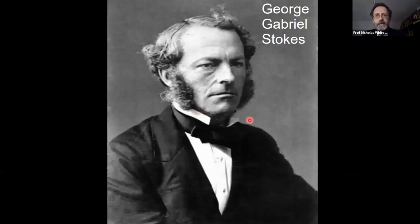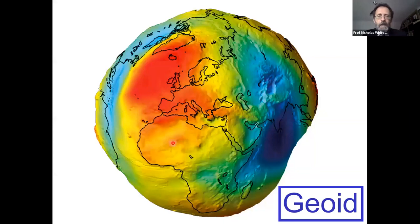The name of the game is how do we interrogate the Earth's surface to extract this signal of dynamic topography. The underpinning physics concerns Stokes flow. Stokes was a very clever applied mathematician who worked in Cambridge in the late 19th century. He was actually from County Sligo in Ireland.